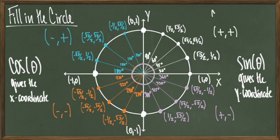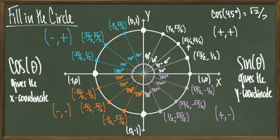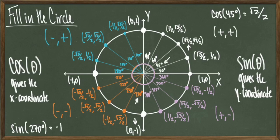All the angles here are known as common angles of the unit circle, and all the points are known as common points. The main use of this circle is to help us start evaluating trig functions — functions that input a real number and output a real number. For instance, to calculate cosine of 45 degrees, we look for the 45-degree angle, find the corresponding point (root 2 over 2, root 2 over 2), and take the x-coordinate, giving root 2 over 2. Similarly, sine of 270 degrees corresponds to the point (0, -1), so the answer is -1.